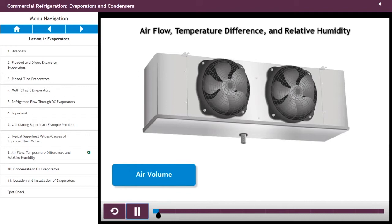This chapter looks at the ways in which air volume, temperature, and humidity affect your evaporator's efficiency.